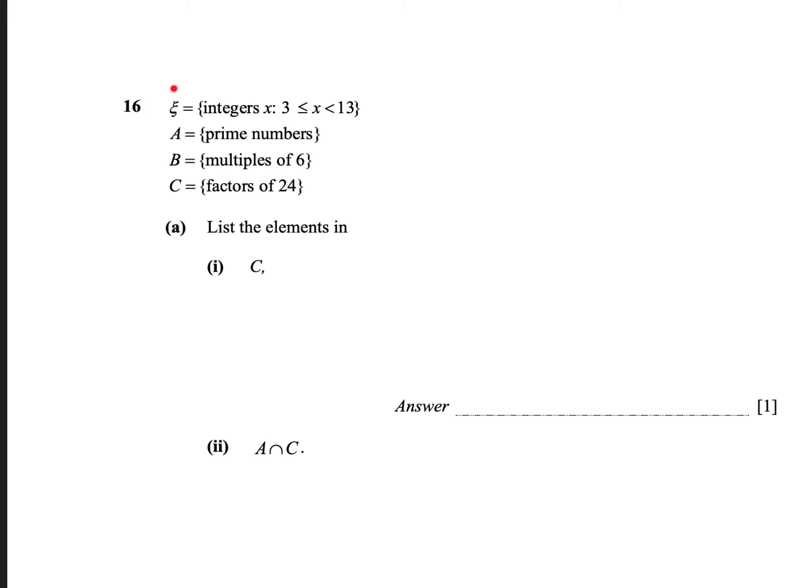Over here we see it says that zai, this alphabet we call it zai in the Greek, equals to integers of x, whereby x is greater or equal to 3 and strictly less than 13. So this is actually the symbol for universal set, which means the set with all the possible elements in it. And then we have set A, which gives me all the prime numbers, we have set B, which contains all the multiples of 6, and set C is factors of 24.